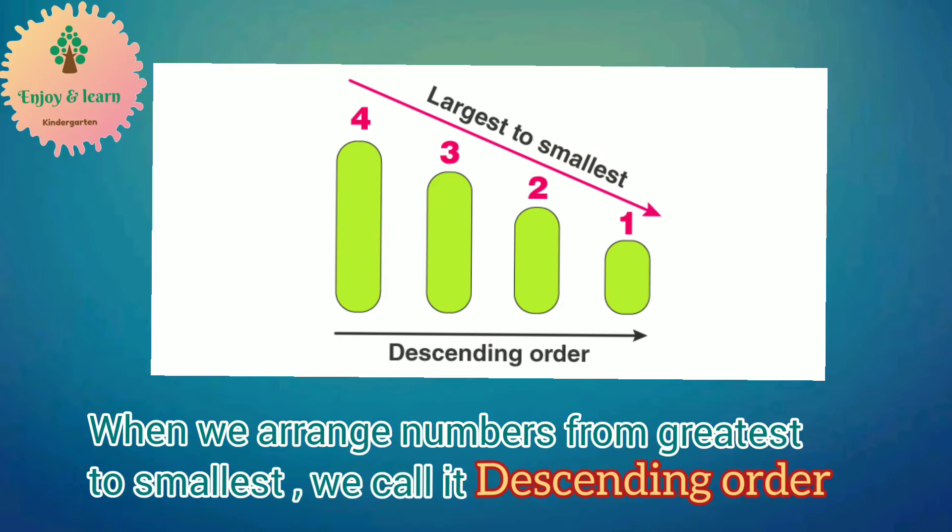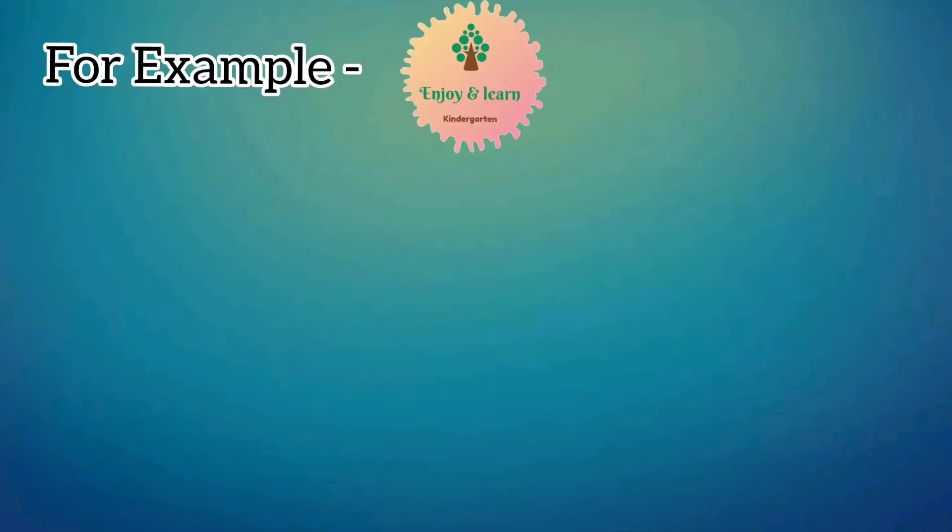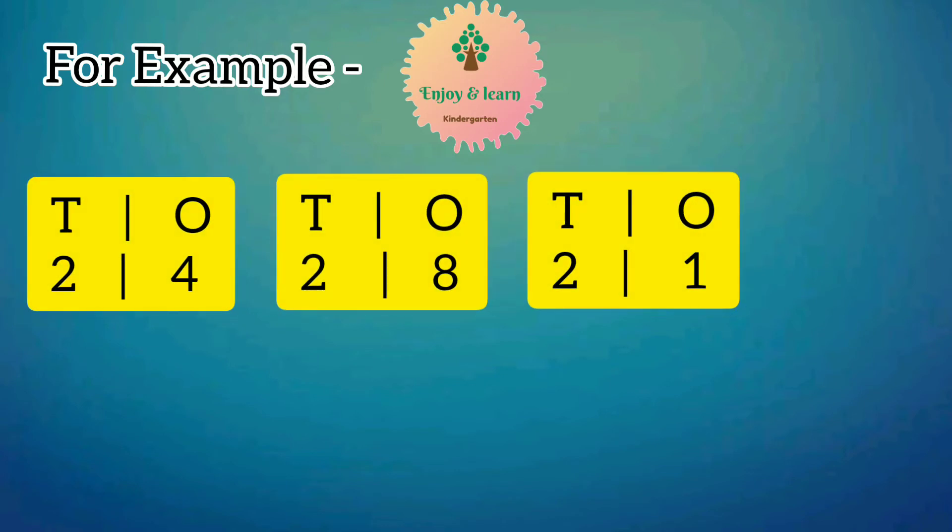Now let us understand it by an example. Look at the boxes. Each box has a number written on it in the form of tens and ones. That is 24, 28, and 21.